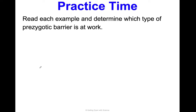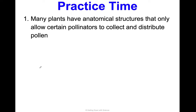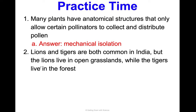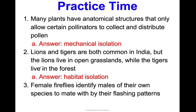Practice: read each example and determine which type of prezygotic barrier is at work. Number one: many plants have anatomical structures that only allow certain pollinators to collect and distribute pollen — that's mechanical isolation, because plants have anatomy too. Number two: lions and tigers are both common in India, but lions live in open grasslands while tigers live in the forest — that's habitat isolation. Number three: female fireflies identify males of their own species to mate with by flashing patterns — that's behavioral isolation.